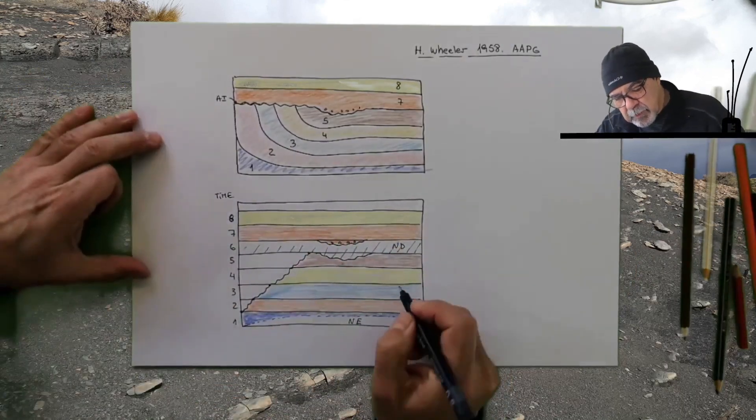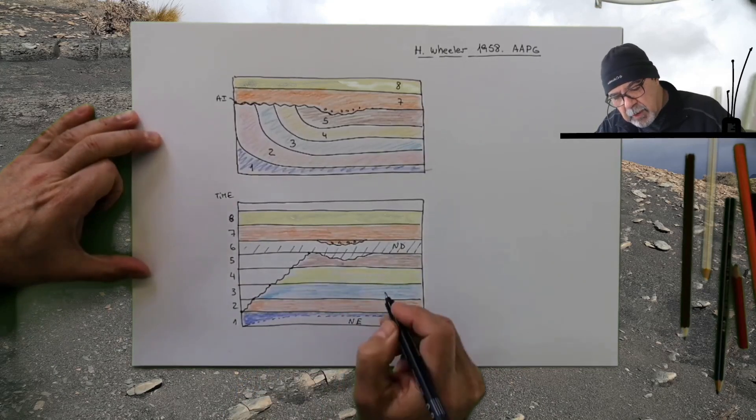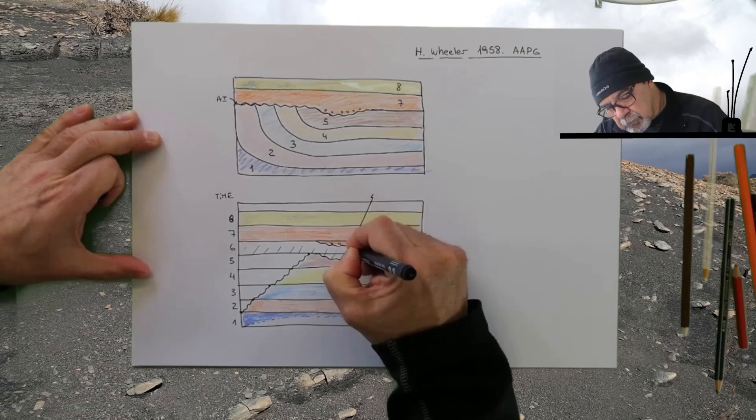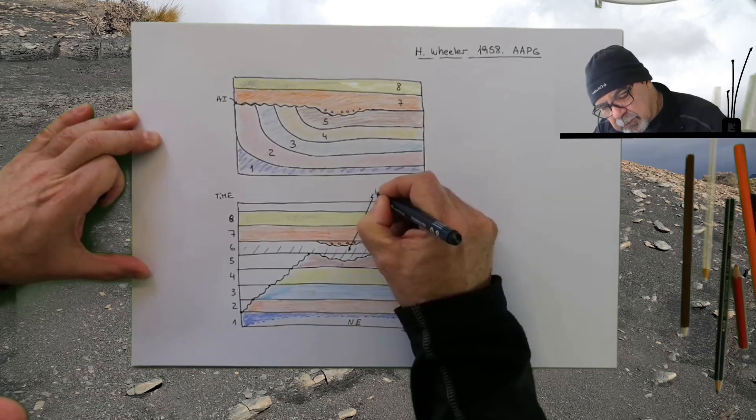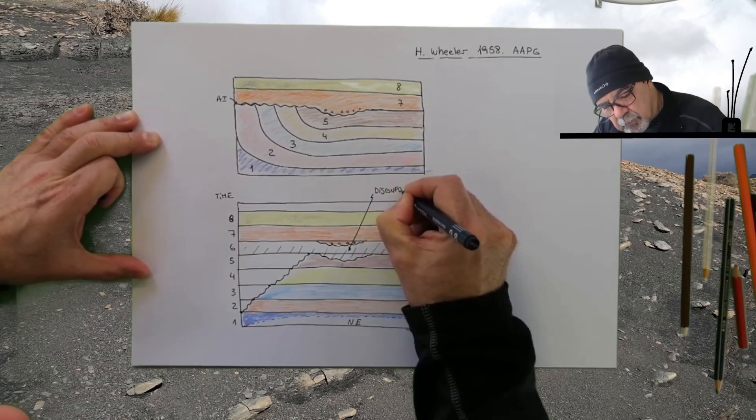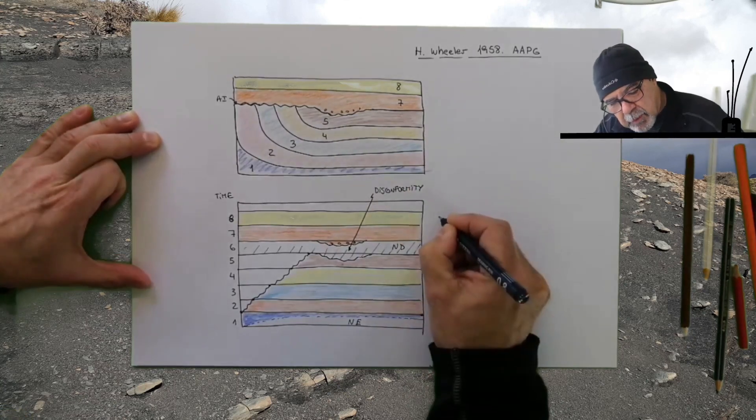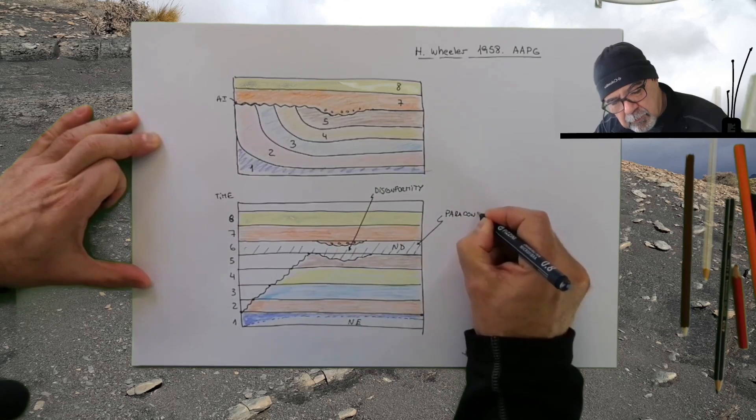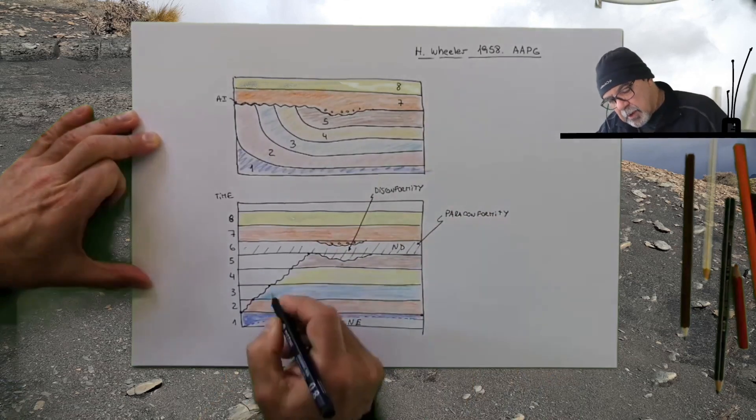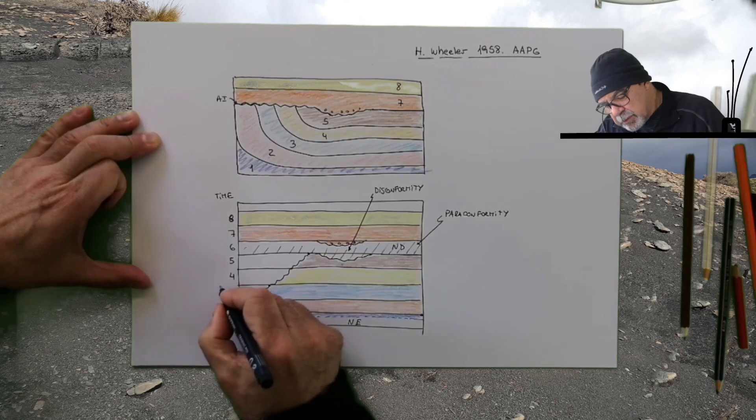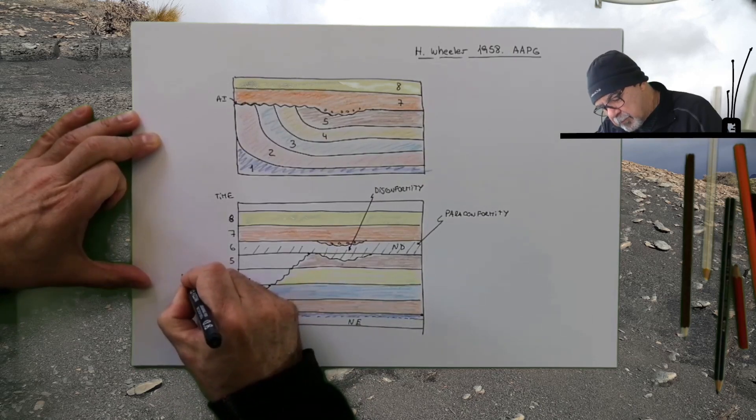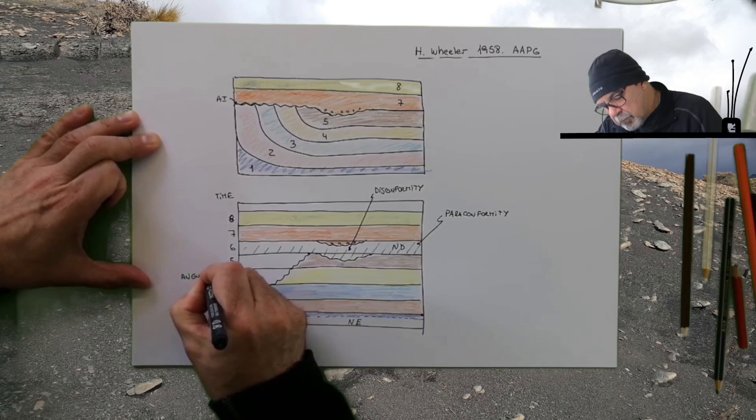The same for the eight. So in this situation you have here a disconformity. Here you have a paraconformity. Here in this situation we have an angular unconformity.